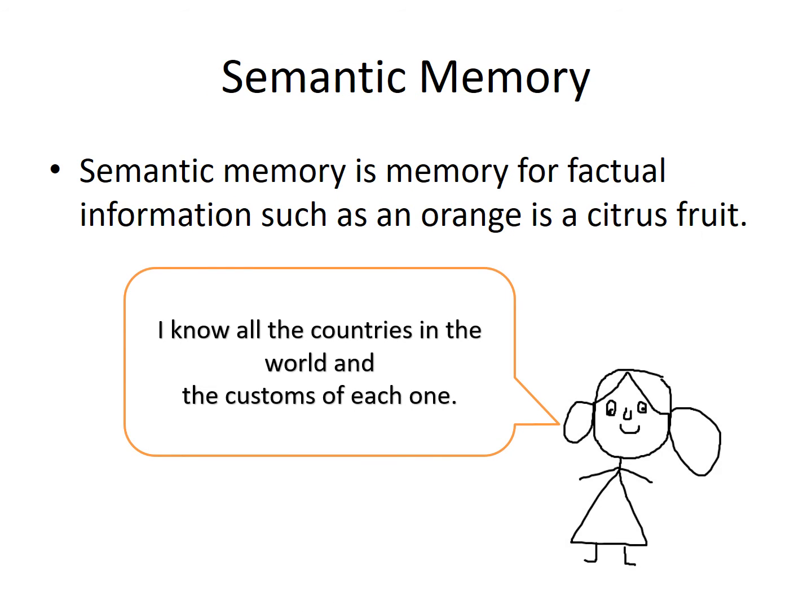Semantic memory is memory for factual information, such as knowing that an orange is a citrus fruit, or knowing the different countries in the world and the customs of each one.